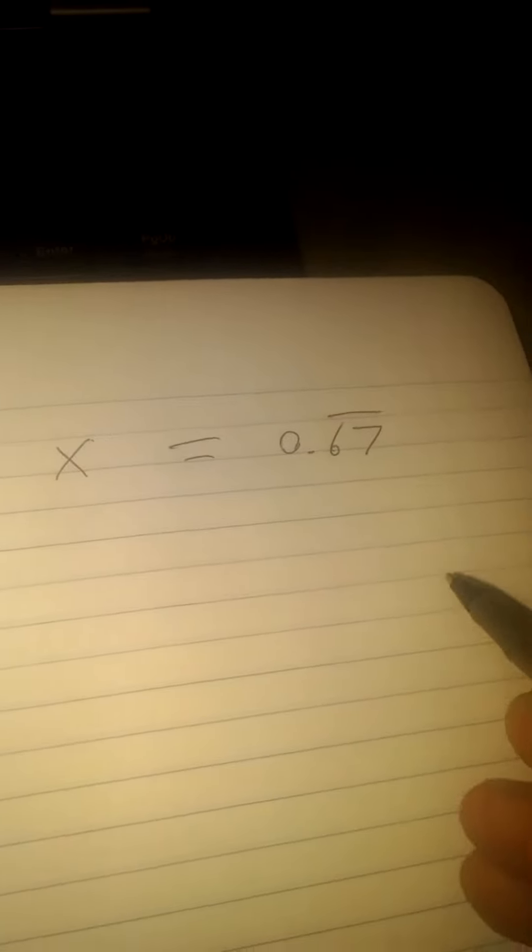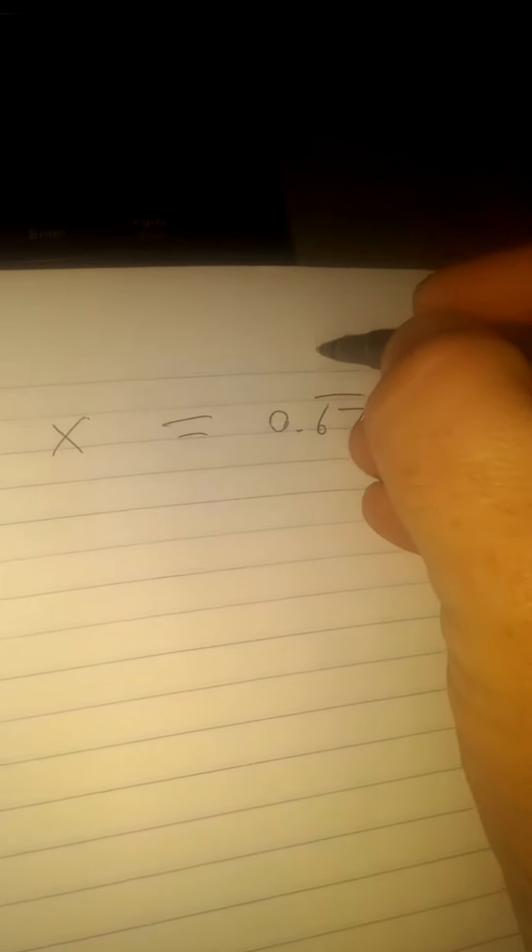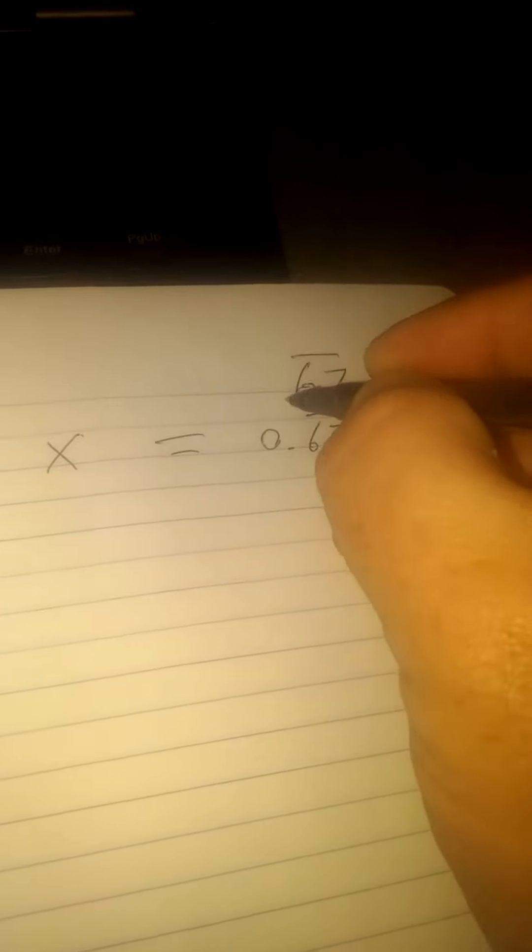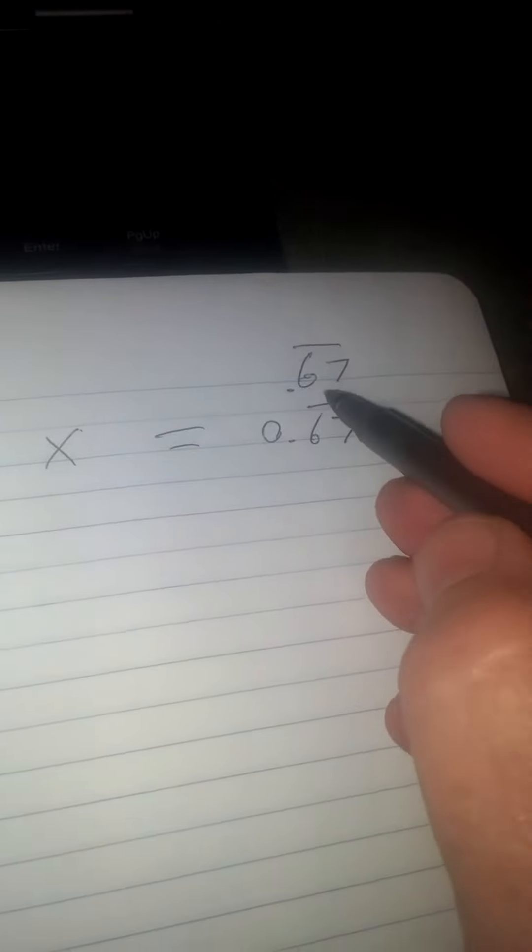So I'm going to say x equals 0.67 repeating. And then I need to subtract somehow so I get rid of that 0.67.